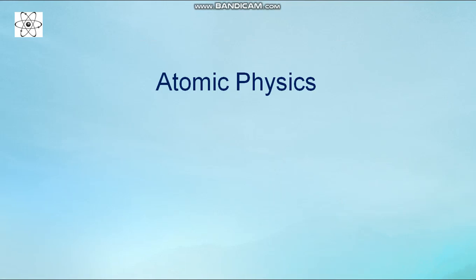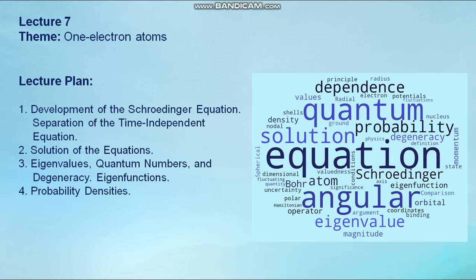Subject: atomic physics, lecture number seven — one electron atoms. Lecture plan: first, development of the Schrödinger equation and separation of the time-independent equation; second, solution of the equations; third, eigenvalues, quantum numbers, and degeneracy; fourth, probability densities.